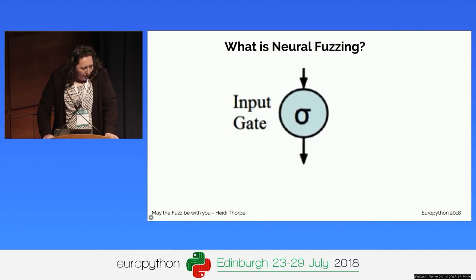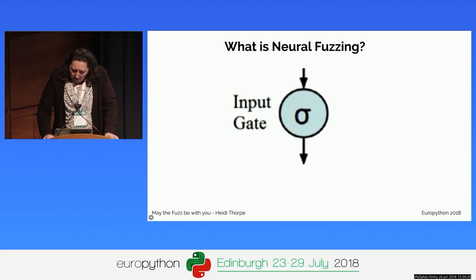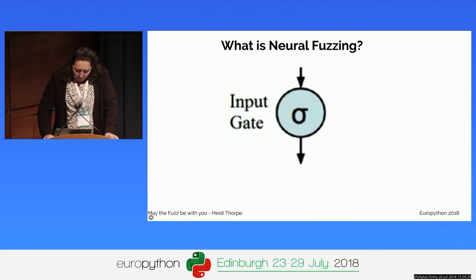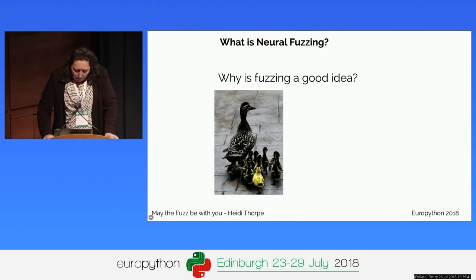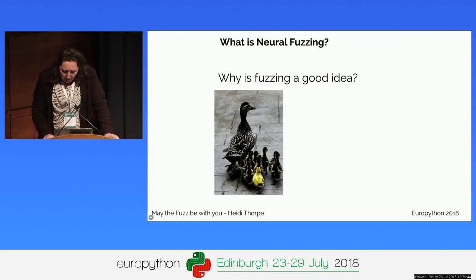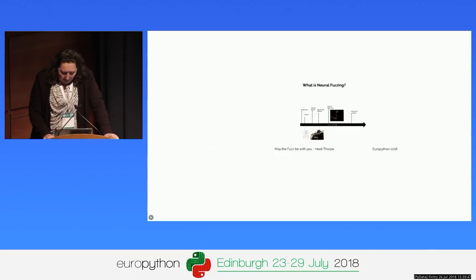So, what is neural fuzzing? Neural fuzzing is a technique using neural networks for fuzz testing — in this case, using neural networks to generate test data. Why is fuzzing a good idea? Well, fuzzing can save money, but it's not just about saving money.